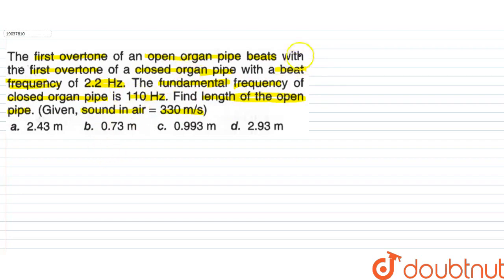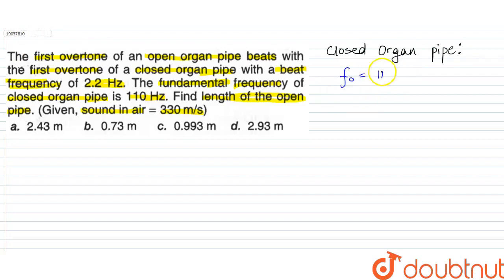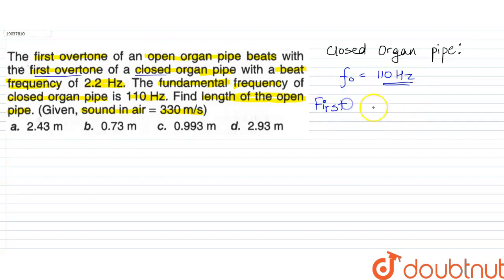So what do we know? First, let's talk about the closed organ pipe. We have been given its fundamental frequency, which is 110 Hz. Then we will find its first overtone. For a closed organ pipe, if we talk about the first overtone, F1 equals 3 times F0.